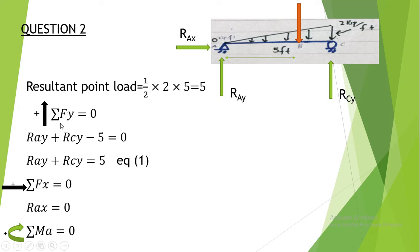After converting, it is simply a case of a simply supported beam subjected to a point load. We apply ΣFy = 0 with upward positive. There are three vertical forces — two upward reactions and one downward resultant — giving us Equation 1, similar to the previous case.